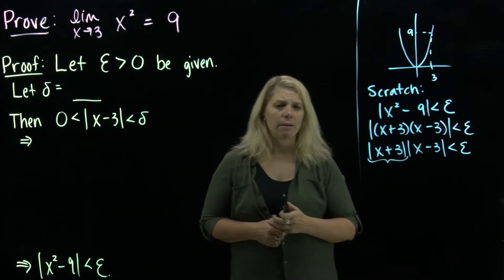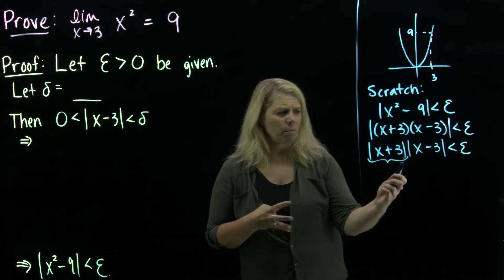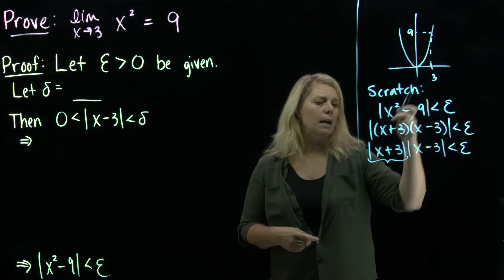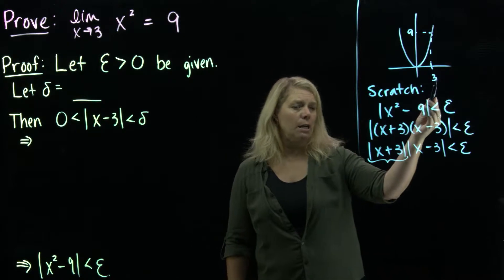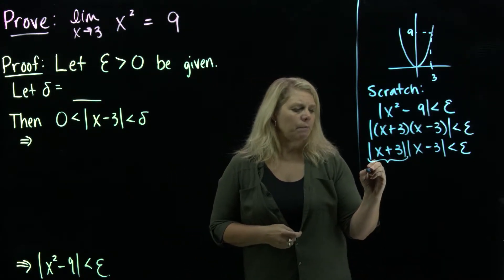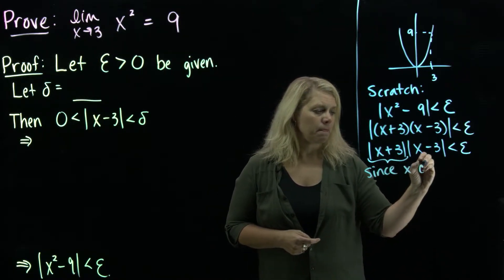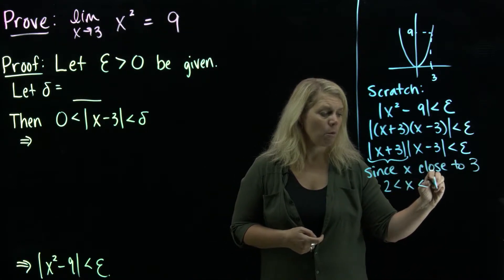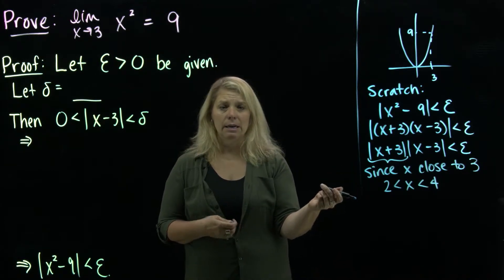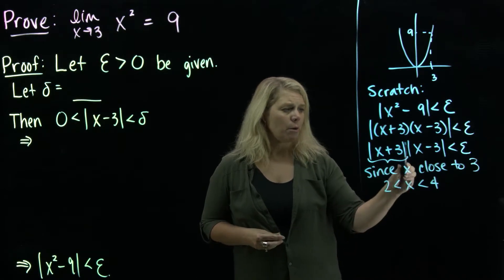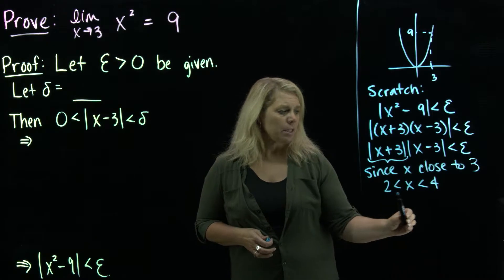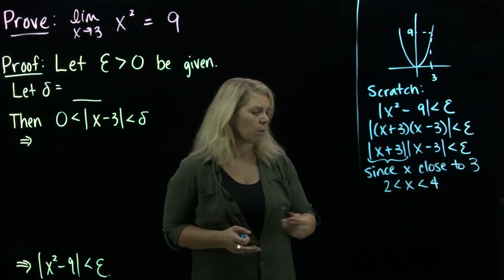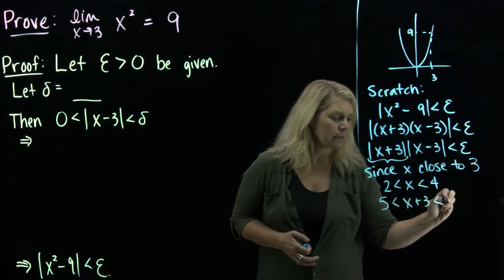The issue is this absolute value of x plus 3. If we could put some numerical bounds on x plus 3 — maybe replace it with a number — that would help us figure out what delta should be. Since we're doing this limit, x is going to be close to 3, so we can safely say x would be between 2 and 4. That's different from anything we did in previous proofs, but the goal is to get a numerical bound on this x plus 3 factor. If we add 3 throughout that inequality, we get 5 is less than x plus 3 is less than 7.